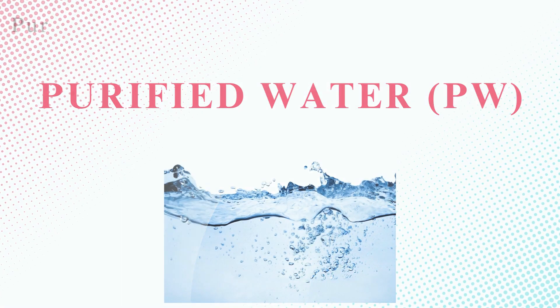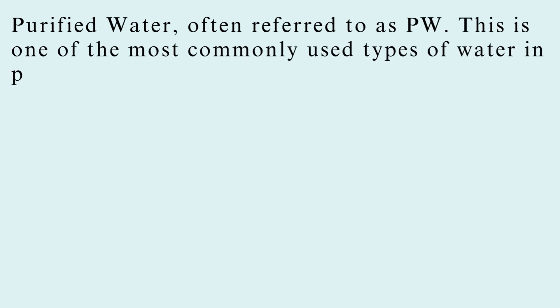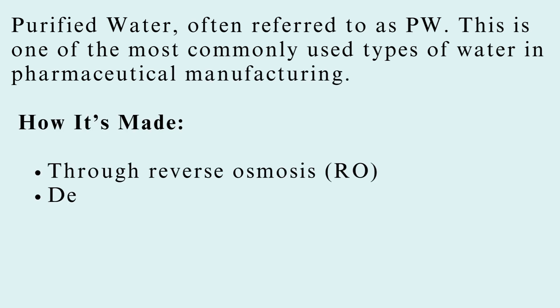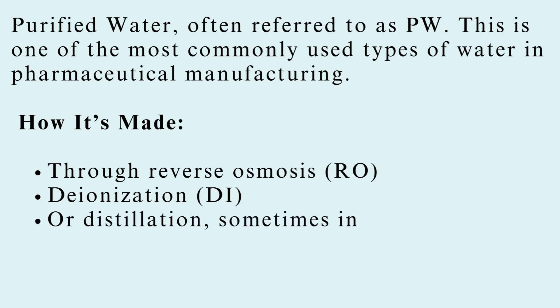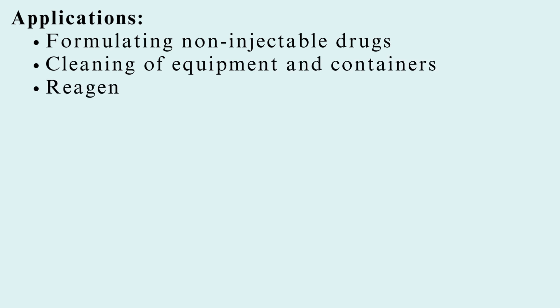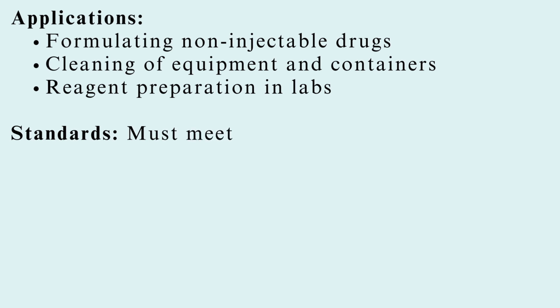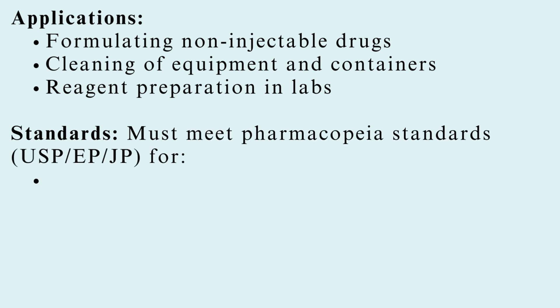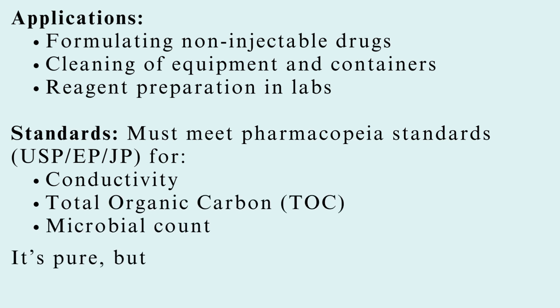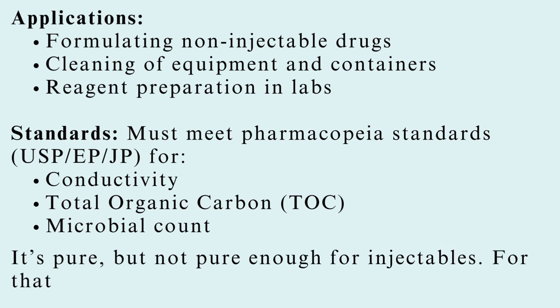Purified water, often referred to as PW, is one of the most commonly used types of water in pharmaceutical manufacturing. It's made through reverse osmosis, deionization, or distillation — sometimes in combination. Applications include formulating non-injectable drugs, cleaning of equipment and containers, and reagent preparation in labs. It must meet pharmacopoeia standards — USP, EP, JP — for conductivity, total organic carbon (TOC), and microbial count. It's pure, but not pure enough for injectables. For that, we need something more potent.